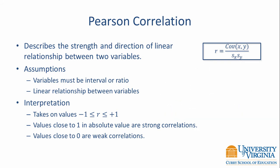The correlation coefficient takes on values between negative 1 and positive 1. Values close to 1 in absolute value are strong correlations, and values close to 0 are weak correlations.